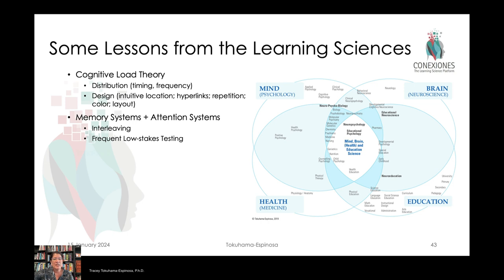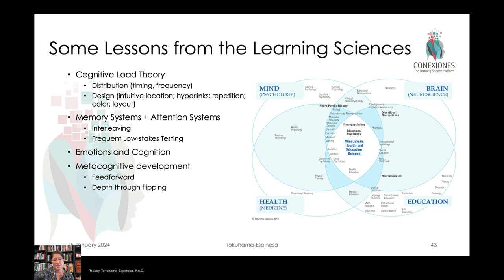Learning sciences have contributed a great deal to design, and the biggest recent impact has to do with emotions and cognition. There is no cognition without emotion. Physiologically speaking, everything you experience in life passes through a filter of emotional interpretation before you reach the cognition level. Taking that into consideration means creating learning environments that are safe, where students dare to err, and where they can have the opportunity for do-overs if necessary. Shifting from an idea of feedback — where you lament what you did — to feed forward — what will you do better next time — is something that's very key within the learning sciences.